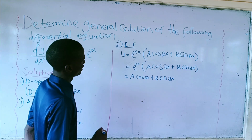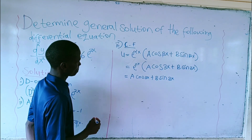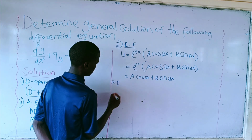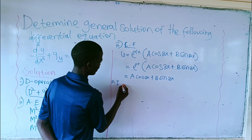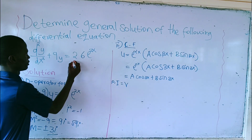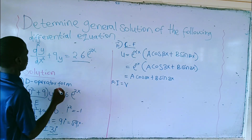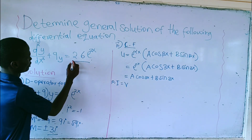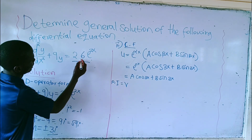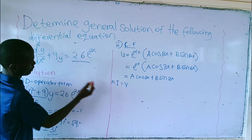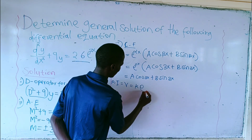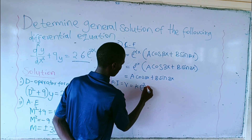After writing this, the next step, I'm going to find the particular integral, which is the same as v. From this equation, we look at the solution value. The solution value here is 26 exponential 2x. So the particular integral will be the same as k exponential 2x.